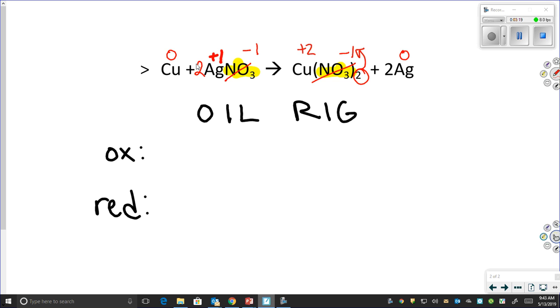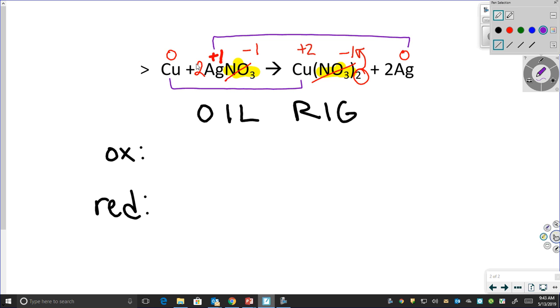So now, I'm going to go in, and I am going to bracket out my species, copper to copper, silver to silver. When I do that, I can see my copper is starting at an oxidation number of zero, and ending with an oxidation number of plus two, which means that I have to be losing two electrons.